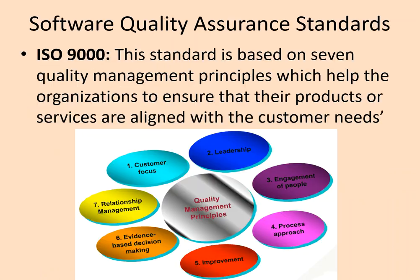Moving on to software quality assurance standards, ISO 9000 is based on seven quality management principles which help organizations ensure their products or services are aligned with customer needs. The seven principles are: customer focus, leadership, engagement of people, process approach, improvement, evidence-based decision making, and relationship management. If an organization follows these seven principles, it can be said to meet the ISO 9000 standard.